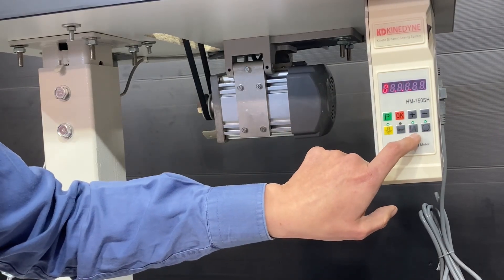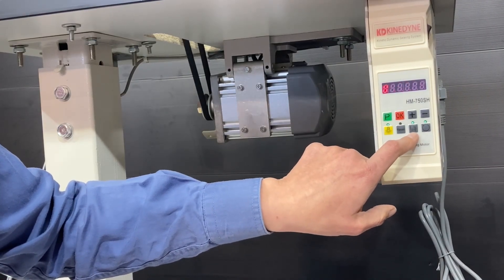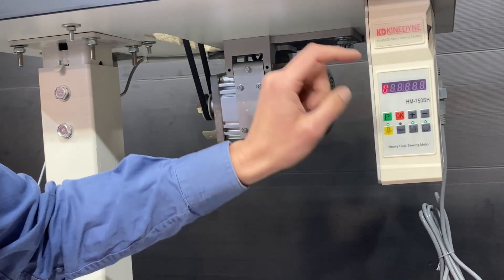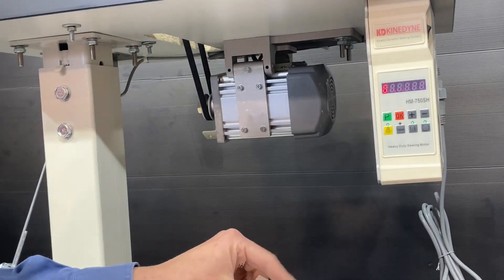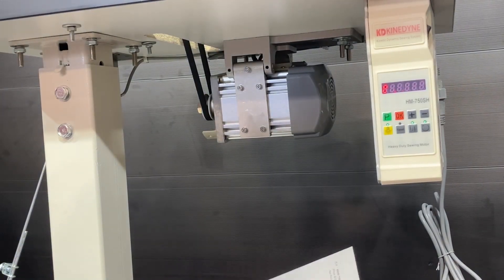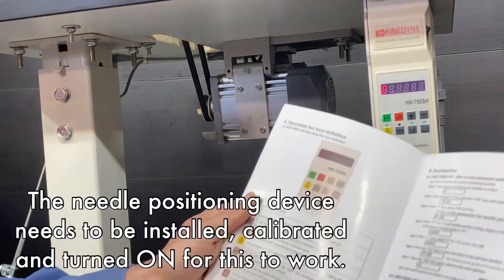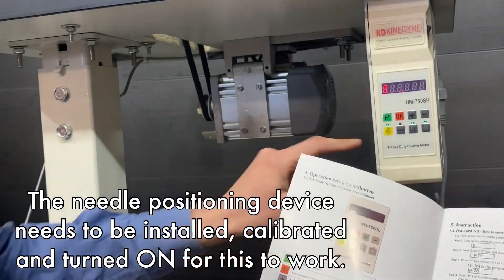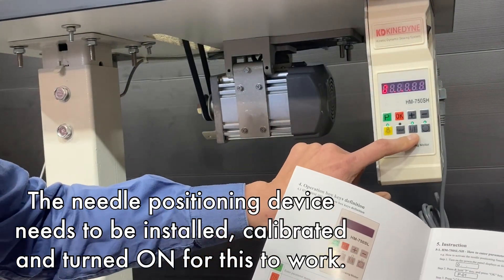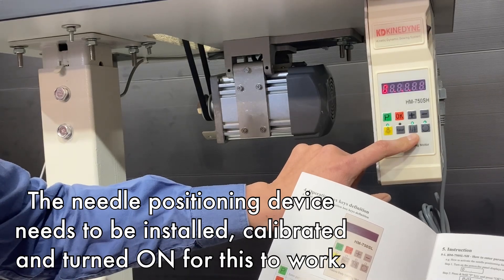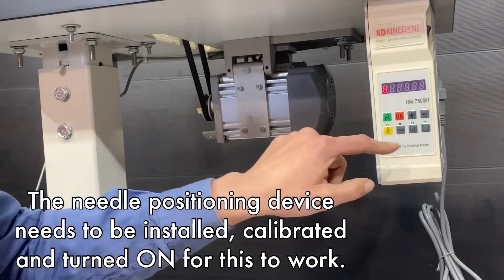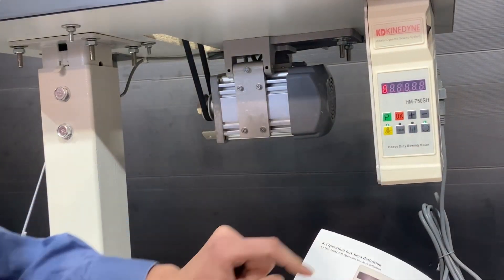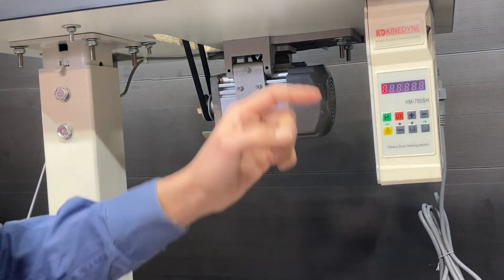And then we can use this button here to decide whether we want the needle to stop in the up position or in the down position. It says it here in the list that when the LED light is on, like it is here, the needle will stop in the up position. When the LED light is off, the needle will stop in the down position.